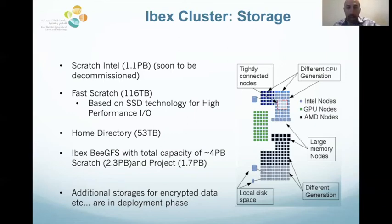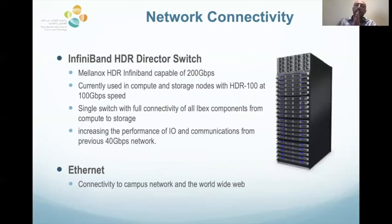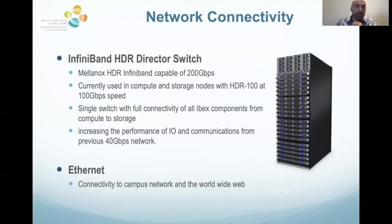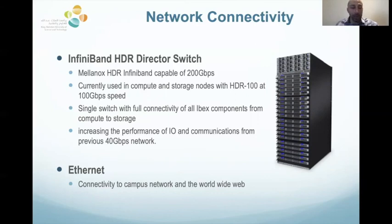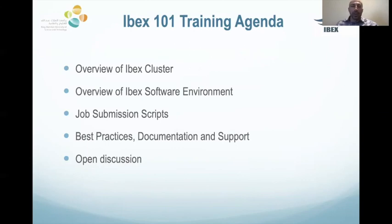All nodes and storage are connected via a high-speed InfiniBand HDR director switch with 800 ports at 200 gigabits per second. Currently, compute nodes operate at HDR 100 — 100 gigabits per second — with each port serving two nodes, providing full connectivity across all Ibex components from compute to storage. This significantly improves IO and inter-node communication performance compared to the previous 40 gigabit per second network, as confirmed by application and IO benchmarks. Ethernet connectivity is also available for admin and campus network access.